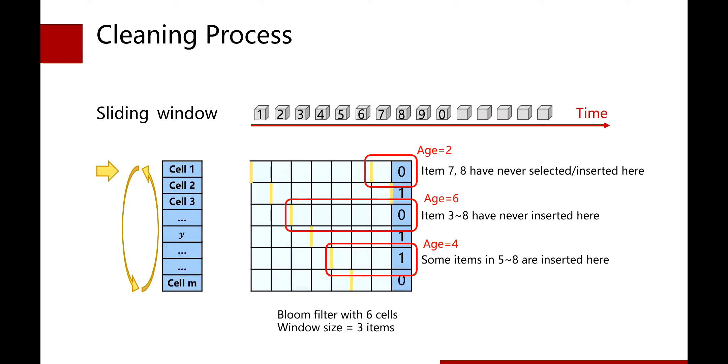We know that every cell has recorded information since it was last cleared. We call the duration of each cell recording information as age. For example, suppose the data structure is a bloom filter with six cells and the sliding window size is three items. After the insertion of the eighth item, we find that the first cell of the bloom filter is zero. We can calculate that the last time cell one was cleared was before the insertion of item seven.